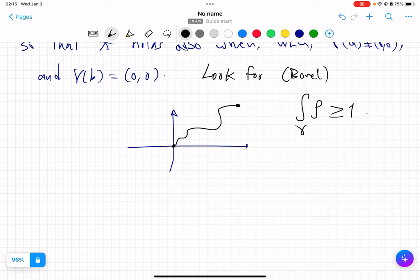So if I make this bigger than one, so look for Borel ρ such that this holds for every γ ending at origin.